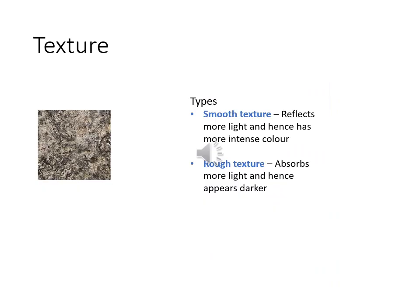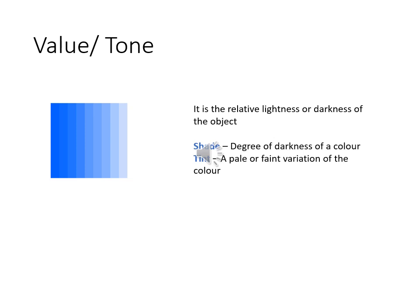The next important element of design is texture, which refers to the surface quality of any object, artwork, or composition. There are basically two types: smooth texture and rough texture. A smooth texture reflects more light and its colors feel more intense, whereas a rough texture absorbs more light and appears darker. Various techniques like dry brushing create rough textures, while proper painting creates a smooth texture. Using various textures in your composition makes it more dynamic and involving.